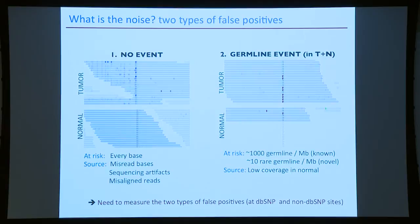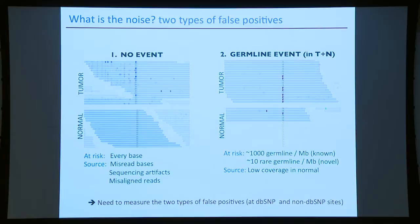There are also systematic errors from sample preparation. FFPE tissue has its own signature of mutations from different mechanisms. One artifact detected here at the Broad is connected to oxidation of DNA — some samples had it and some did not. If the tumor had it and the normal did not, we would find apparent somatic mutations that are actually artifacts, not real mutations.